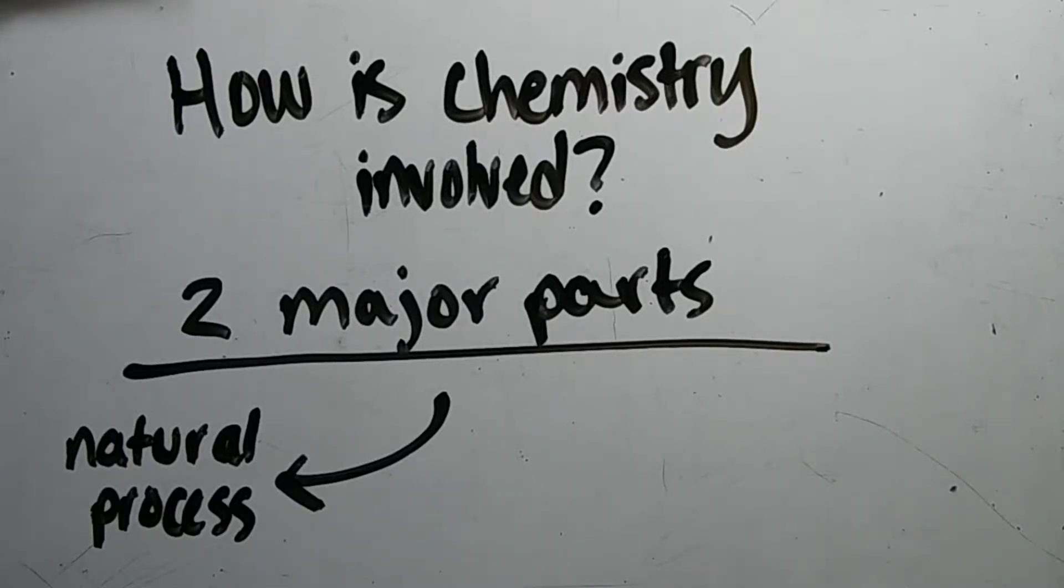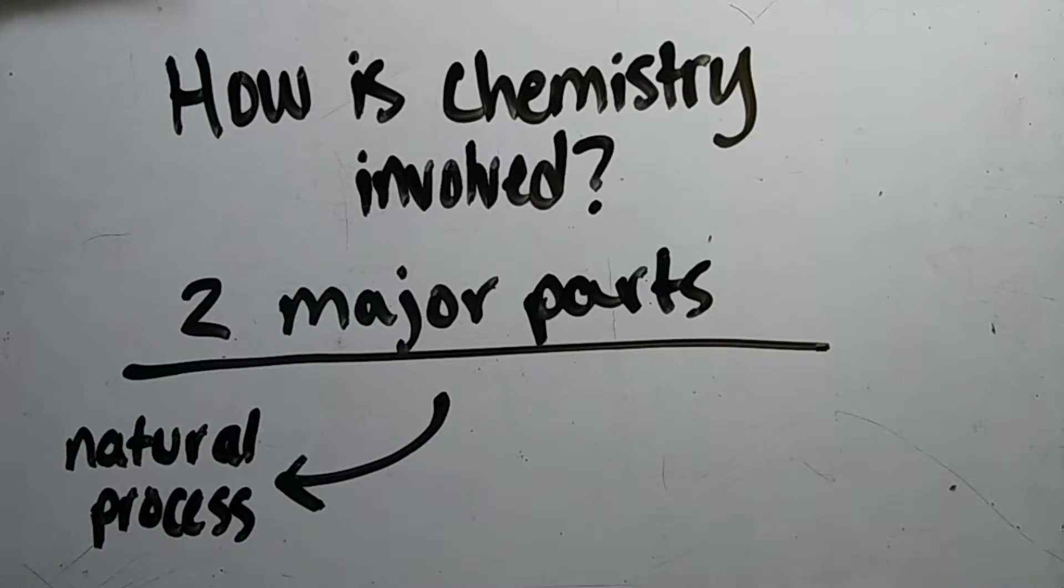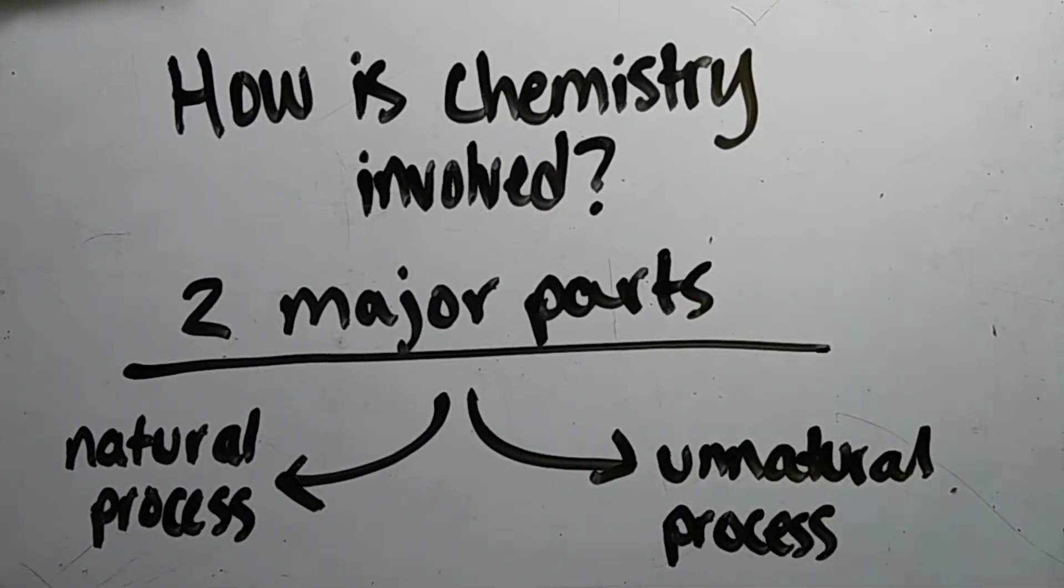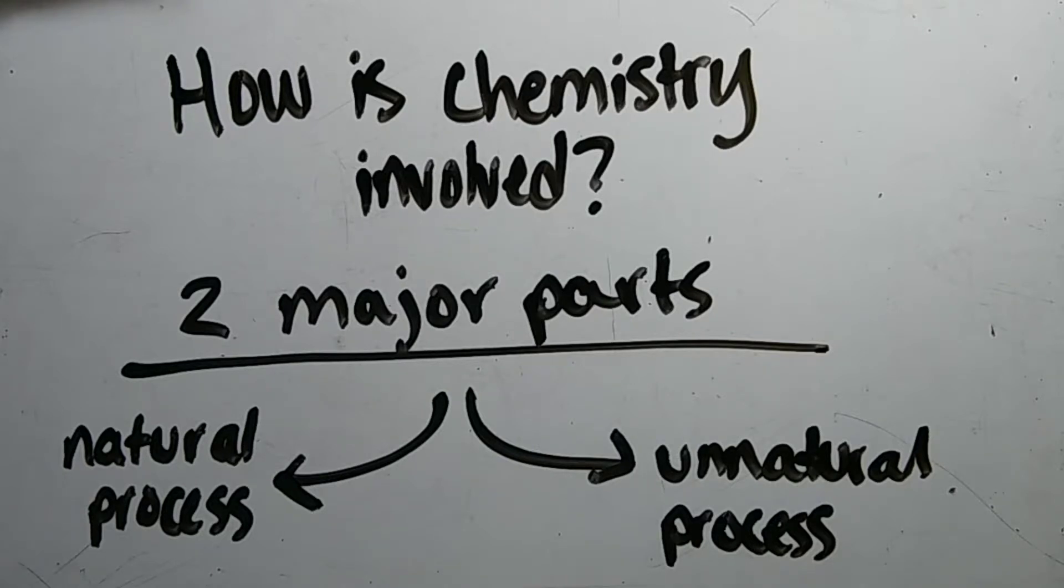Then you have your unnatural process. With the unnatural process, you'll have growers and scientists alike taking two different types of bananas and taking their strands of DNA and combining them together to get the perfect banana, or what you usually see within stores, thus making a hybridization.